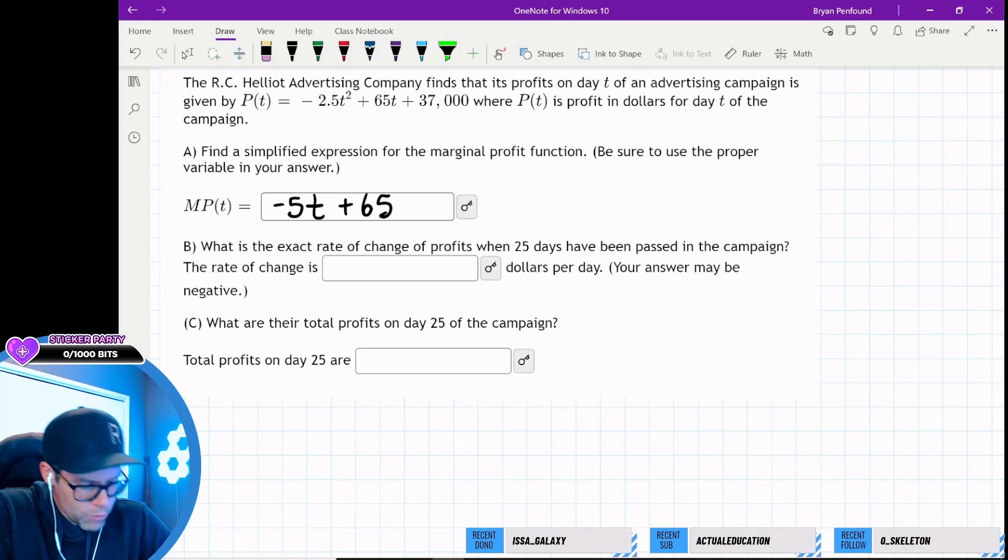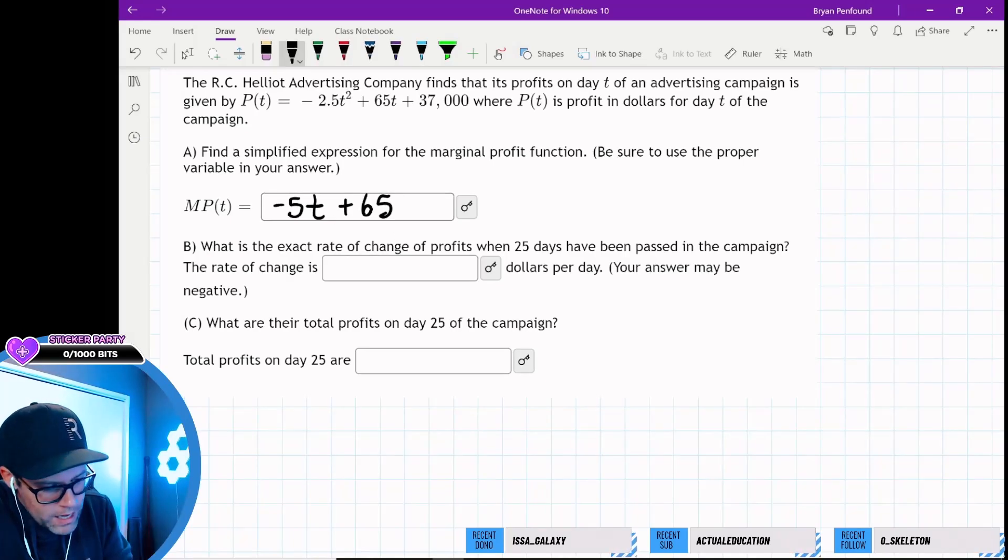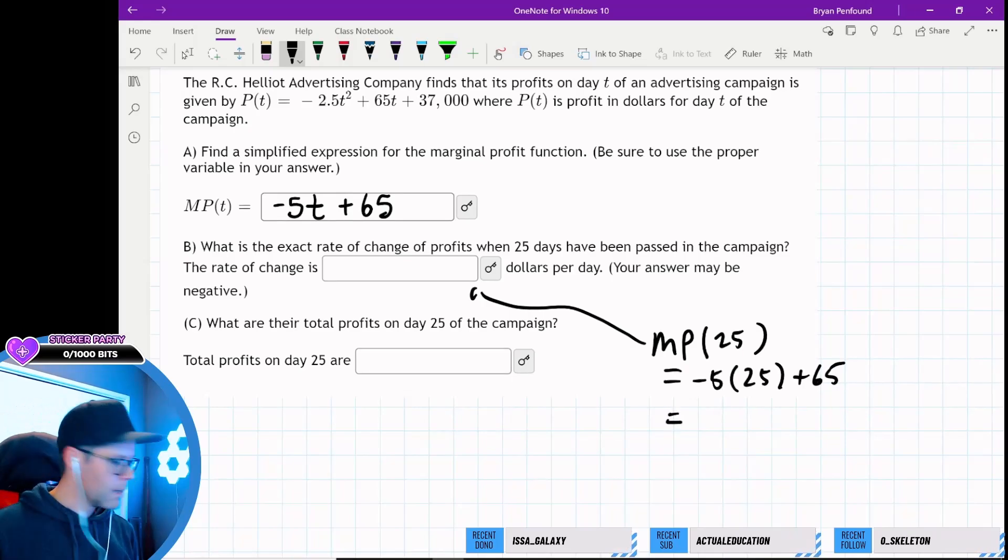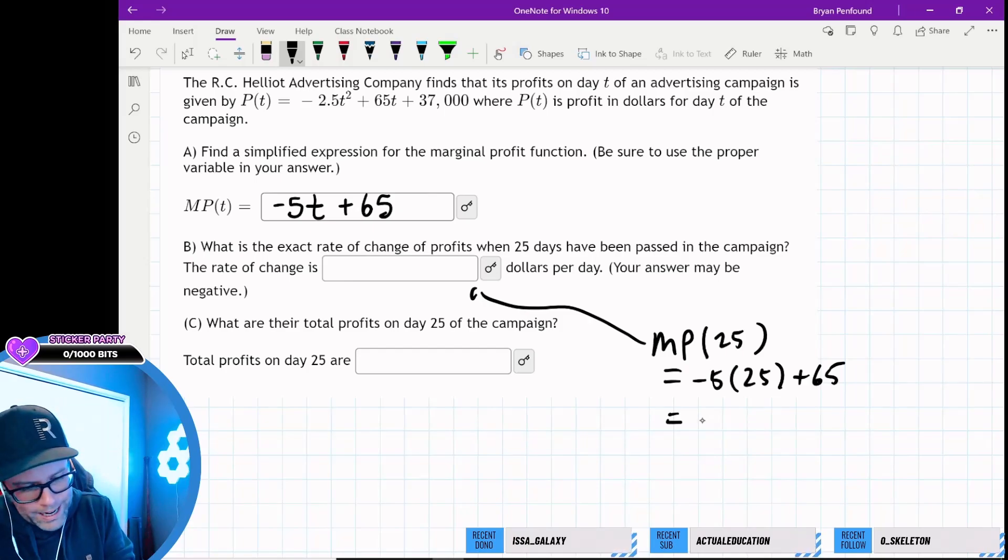What is the exact rate of change of profits when 25 days have been passed in the campaign? So T is day of the campaign. The rate of change is MP. So this here is going to be our MP evaluated at 25, which should be negative five times 25 plus 65. So five times 25 is one, so negative 125. So negative 125 plus 65. So I think we're looking at negative 60 here.